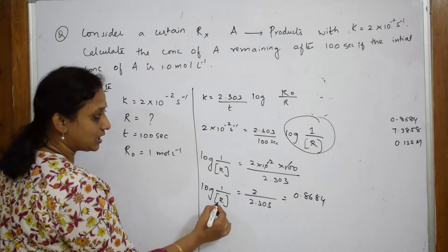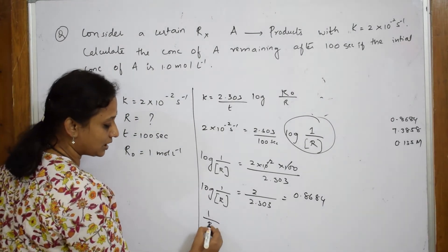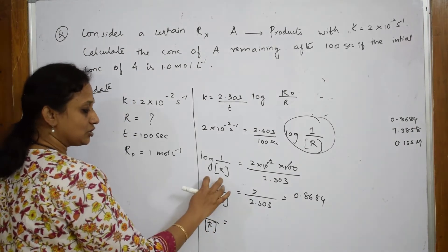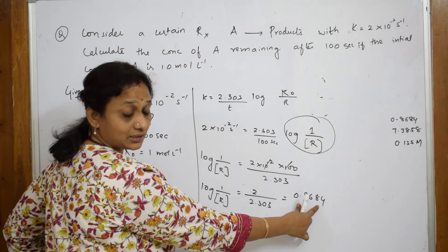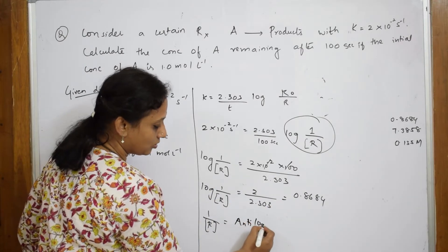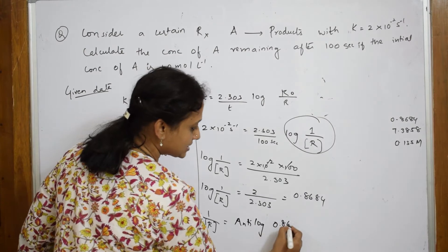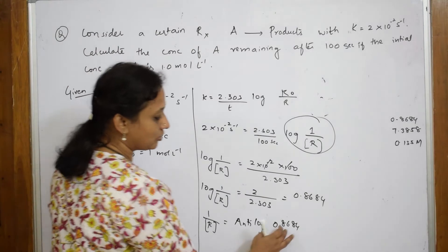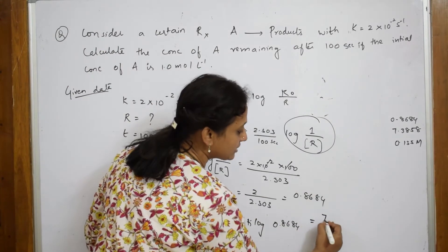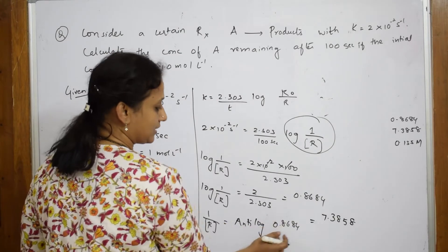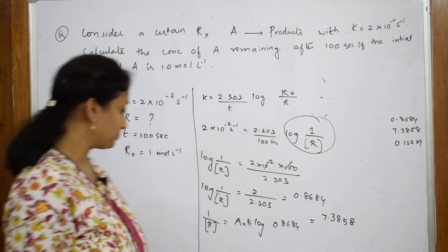Now, you have to find R value. 1 by R is equal to, this is your log value of this particular thing. Now you have to find the antilog, antilog of 0.8684 because log value you've got. To get the final answer, you do the antilog part. How much you get? You get 7.3858, antilog of this particular value.